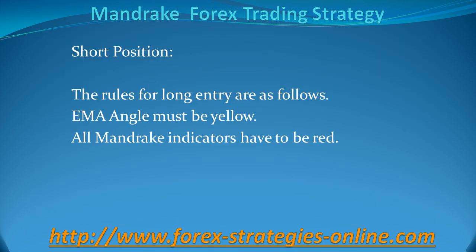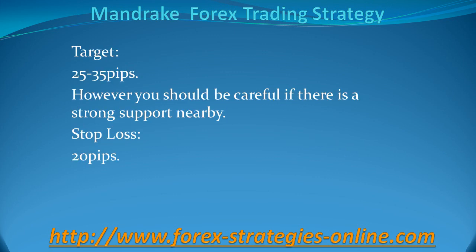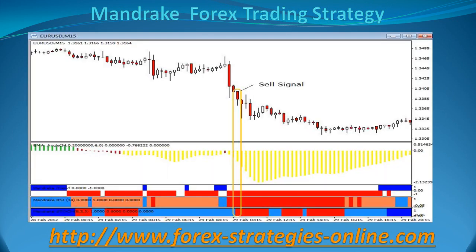Strategy for short position. The rules for short entry are as follows: EMA Angle must be yellow, and all Mandrake Indicators have to be red. Target: 25 to 35 pips. However, you should be careful if there is a strong support nearby. Stop loss: 20 pips.